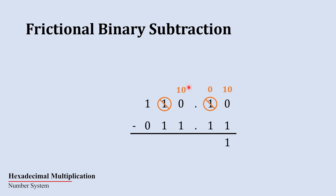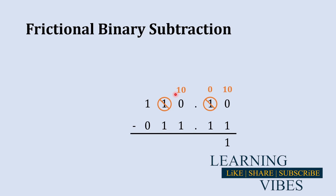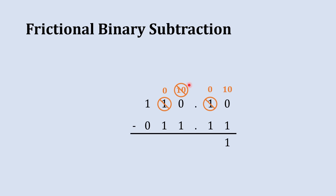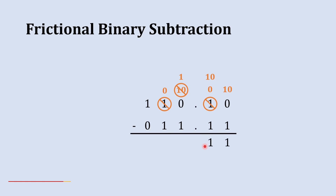Now that the intermediate column has become 1 0, it is capable of giving a borrow to the previous column. We take 1 as borrow from it, leaving 1 behind. Then we take that borrow to the column that originally needed it, making it 1 0. Subtracting 1 from 1 0 gives us 1. We place the binary point at the same position.